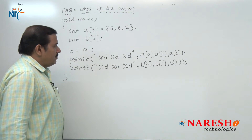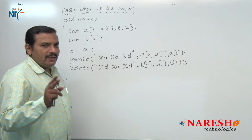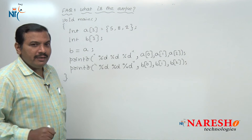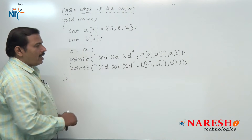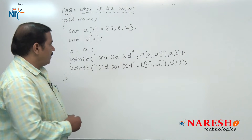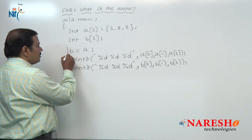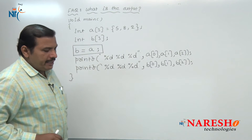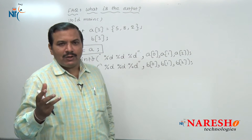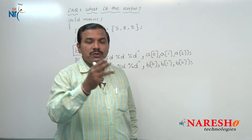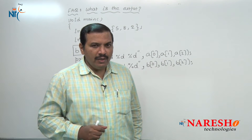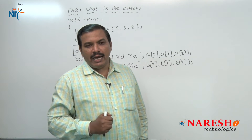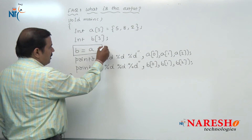Let us look at this question. In this given question, two integer arrays are given — one integer array A and another integer array B. This code causes a compile-time error. The intention is copying the content of integer array A into another integer array B, but if you want to copy the values of array A into array B, this direct assignment statement is wrong.